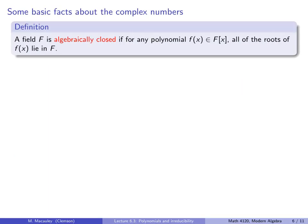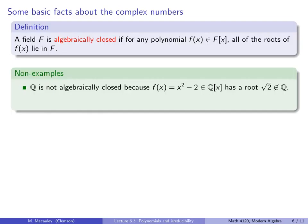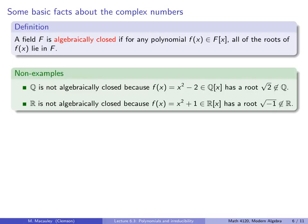Let's return to polynomials. We say that a field F is algebraically closed if for any polynomial over that field, all of the roots of the polynomial lie in the field. The rationals are not algebraically closed because x² − 2 is a polynomial over Q and it has a root, √2, that is not in Q. The real numbers are not algebraically closed because x² + 1 is a polynomial over ℝ, but its root √(−1) is not in ℝ.